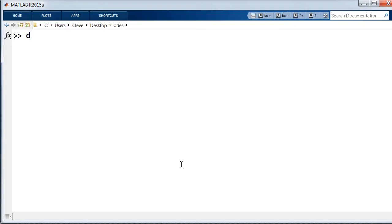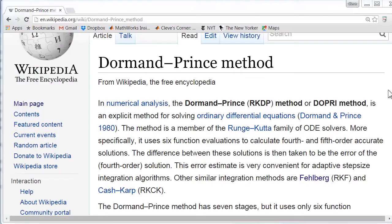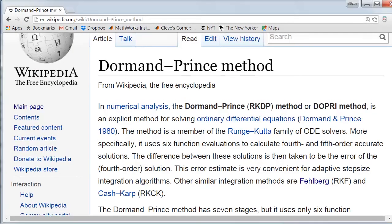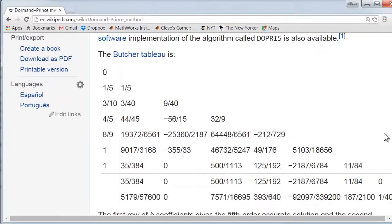If you want to see the actual coefficients that are used, you can go into the code for ODE45. There's a table with the coefficients. Or you can go to the Wikipedia page for the Dormand-Prince method and there's the same coefficients.